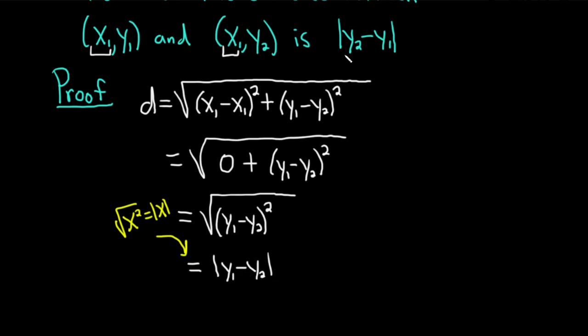Now we have to show it's equal to the distance between y₂ and y₁. Well, the distance between y₁ and y₂ is equal to the distance between y₂ and y₁, and so that completes the proof.